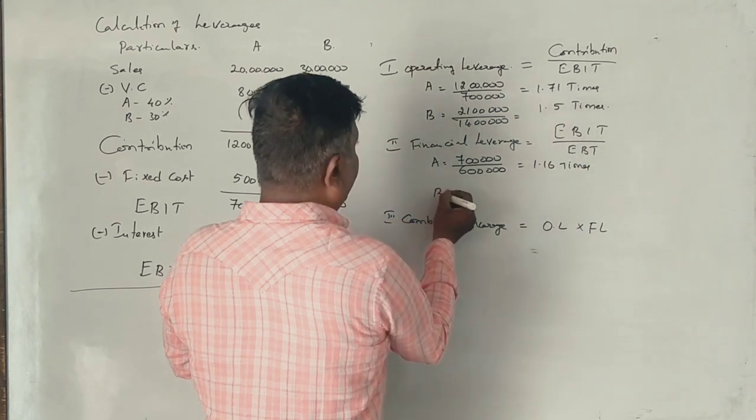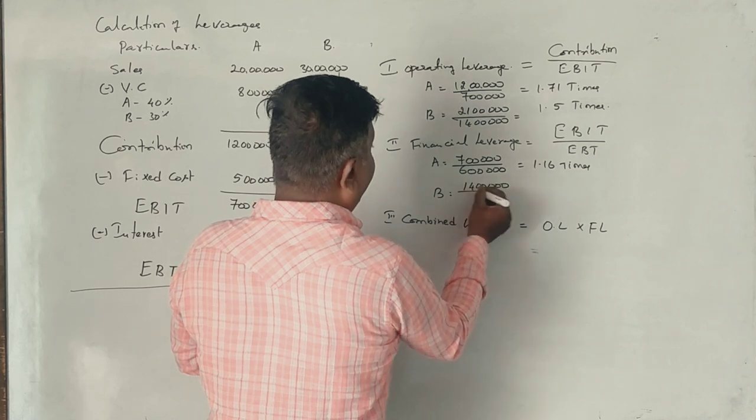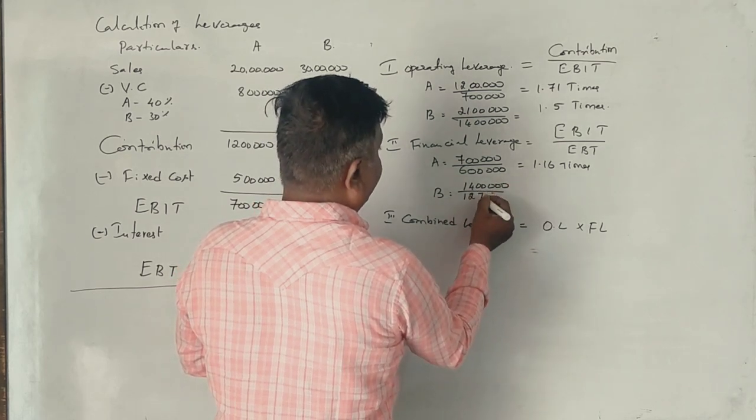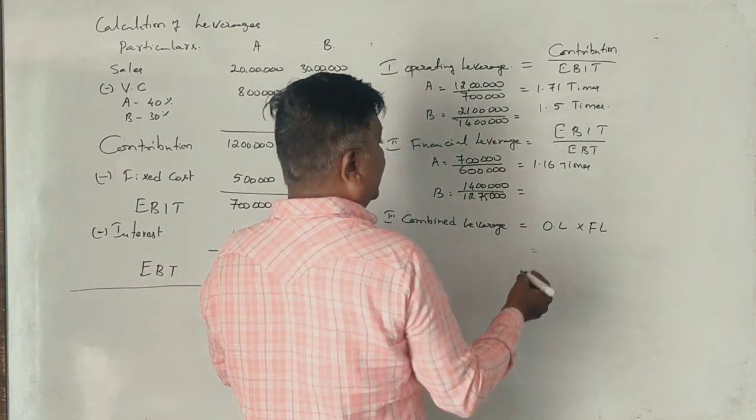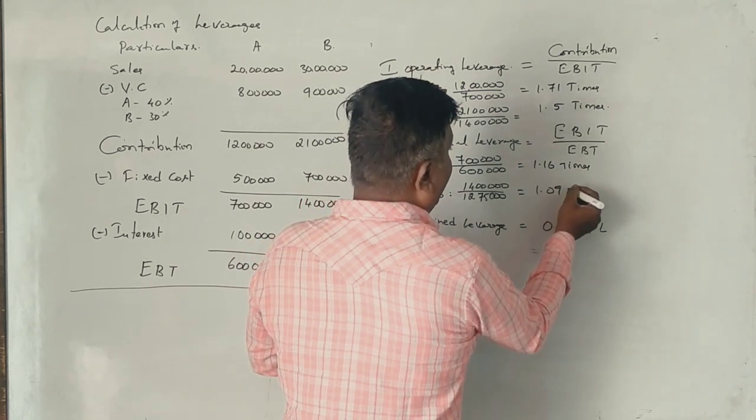For Firm B, 14 lakhs divided by 12 lakhs 75,000, equals 1.09 times.